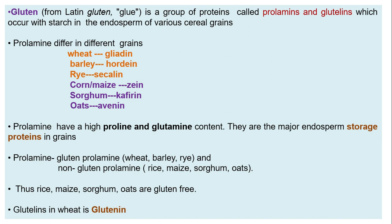Gluten prolamin can be seen in wheat, barley, and rye. Non-gluten prolamin can be seen in rice, maize, sorghum, and oats. Thus, rice, maize, sorghum, and oats are gluten-free. This is an important point: rice, maize, sorghum, and oats are gluten-free.